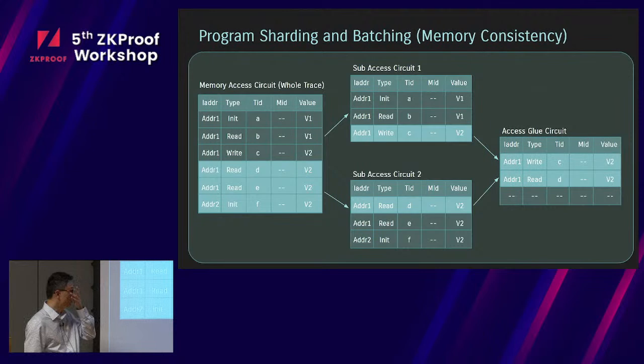One might ask, what about the call frame table? Because the call frame table is not that big, every time we have a full call frame table for all the shards of the programs. So there's no need to prove the consistency of the call frame because we have a full copy for every sub-proof.